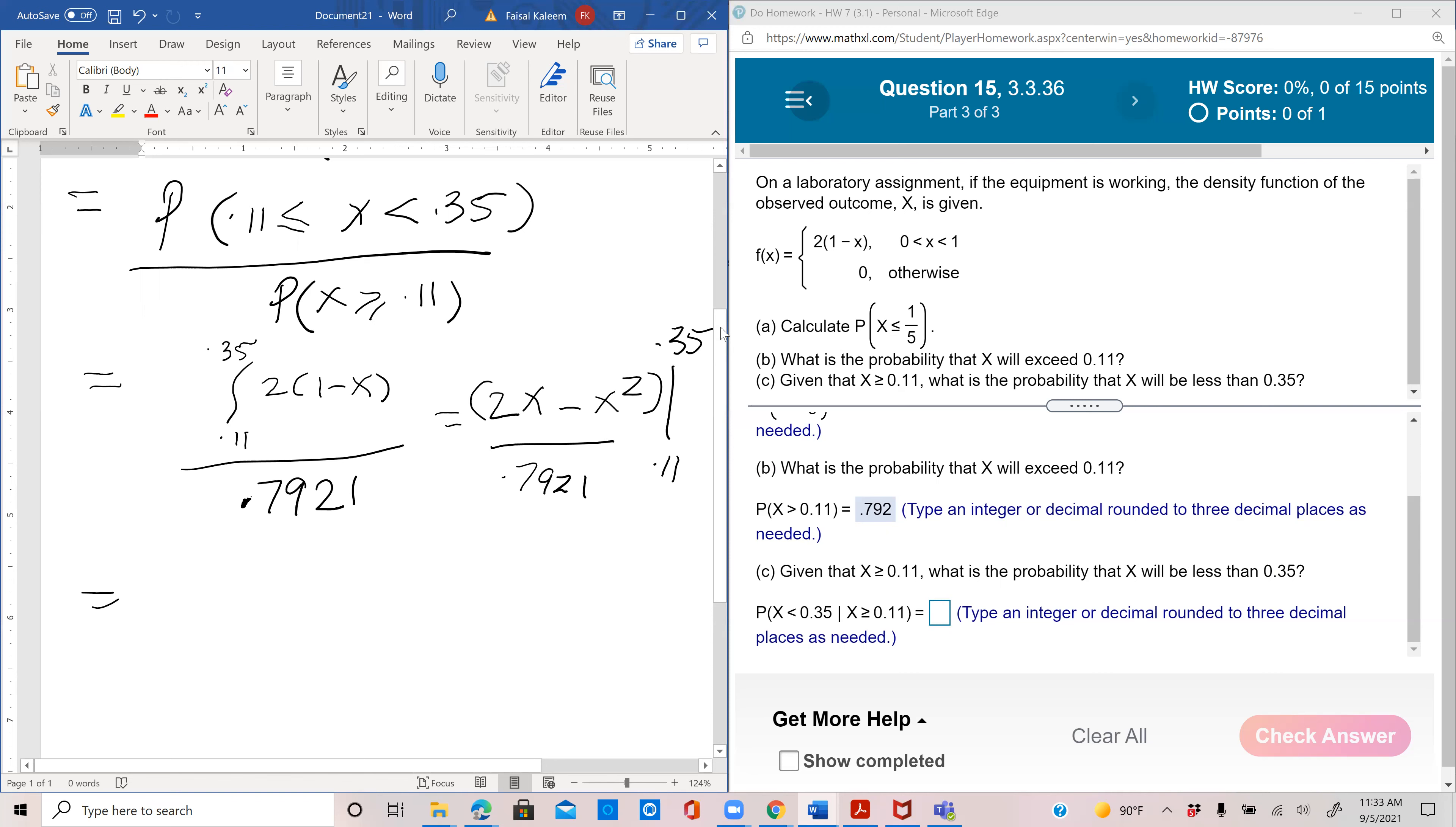So when you put x equals 0.35, 2 times 0.35 is 0.7, and then minus 0.35 squared, minus 2 times 0.11, minus 0.22, and minus 0.11 squared